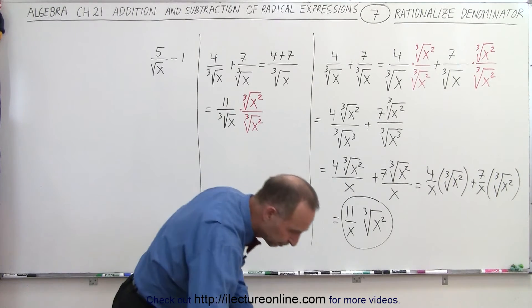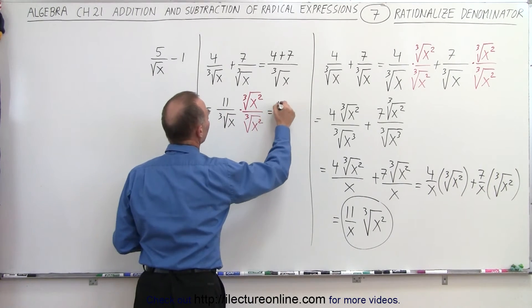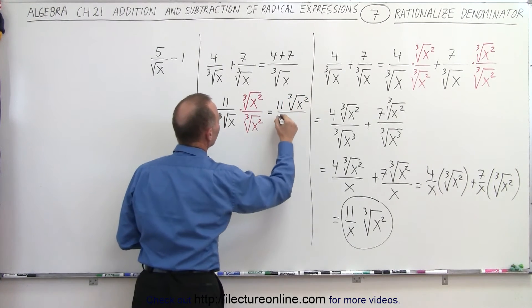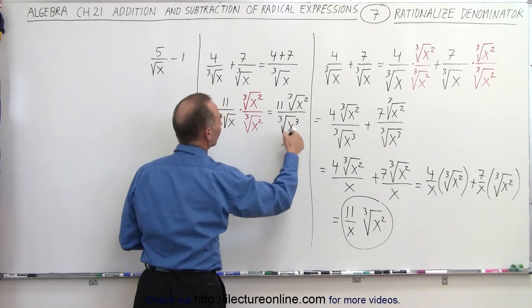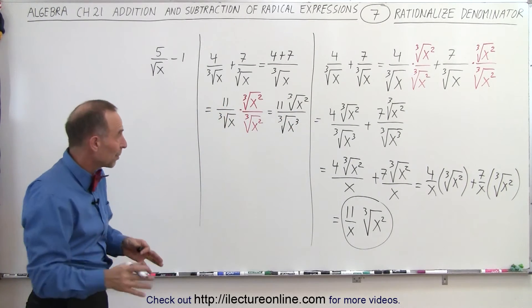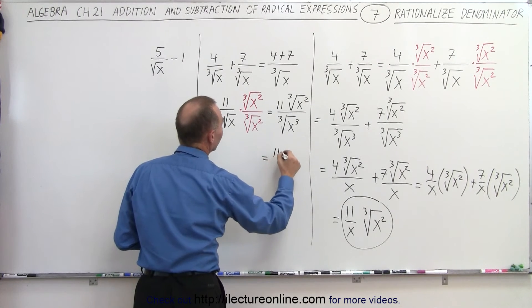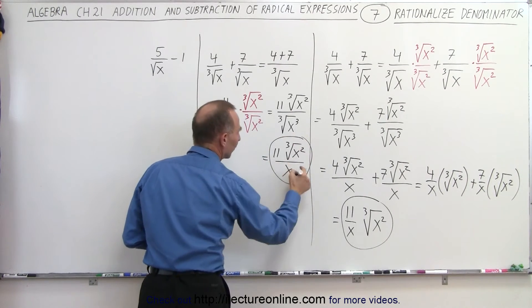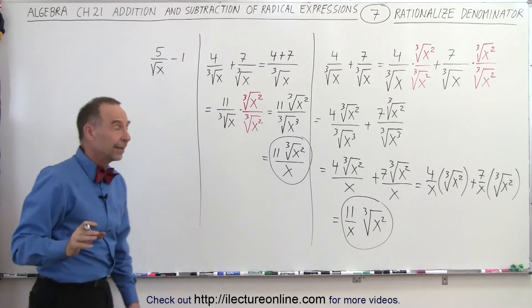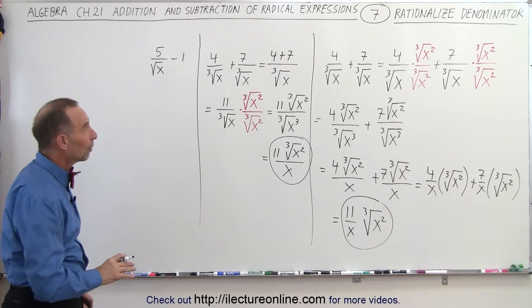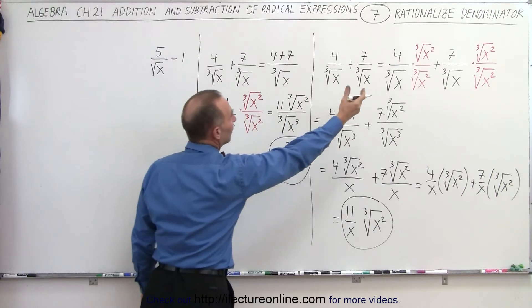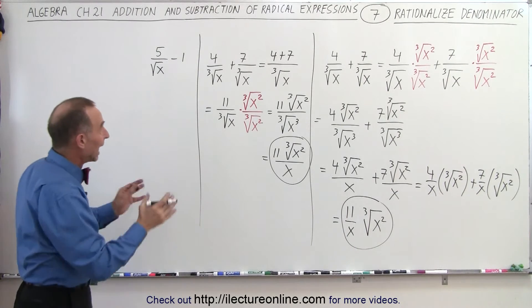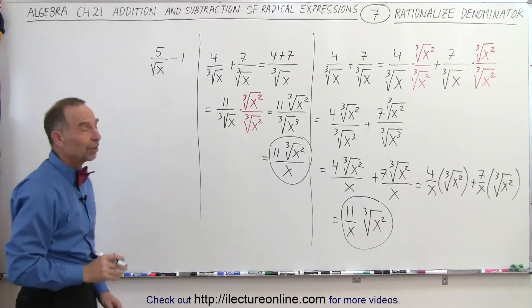When you do that, in the numerator you end up with 11 times the cube root of x squared, divided by — in the denominator — the cube root of x cubed, which of course simply becomes x. So this is equal to 11 times the cube root of x squared divided by x. And yes, you'll get the very same result. Either way is a perfectly fine approach. Typically you immediately rationalize the denominators, but you can actually work a bit faster by simply adding the numerators first, since the denominators are the same.